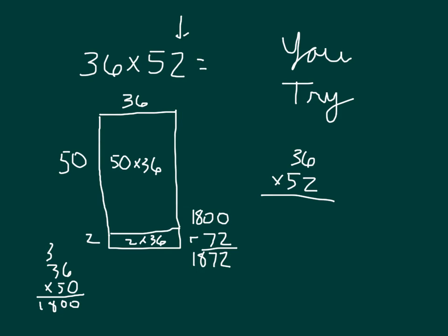Using our standard algorithm, 36 times 52. We'll start with the 2. 2 times 6 is 12, regroup of 1. 2 times 3 is 6, plus 1 is 7. Place a 0. 5 times 6 is 30, regroup of 3. 5 times 3 is 15, plus 3 is 18. And adding them together, just as before, I also get 1,872. And I'll make sure to place my commas as well.